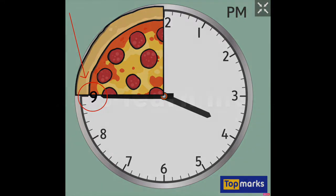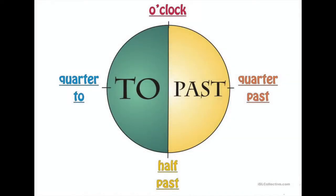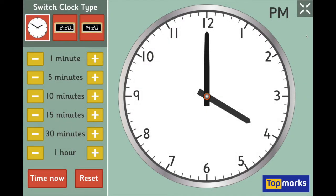Let's explain a little further. You have to imagine our analogue clock divided into two sections. The section on the right is known as the past side, and the side on the left is known as the to side. This is because as the minutes of time pass on the clock, the times go from past times to to times.